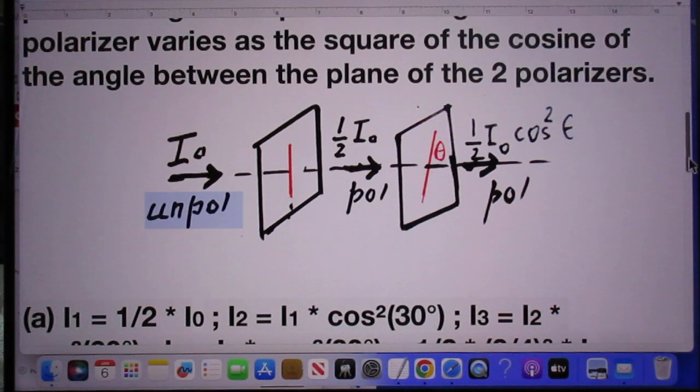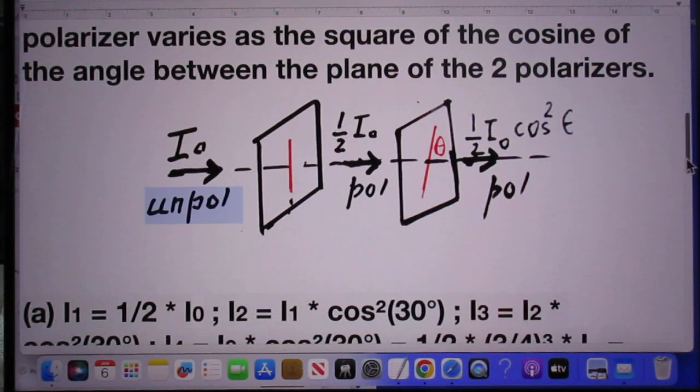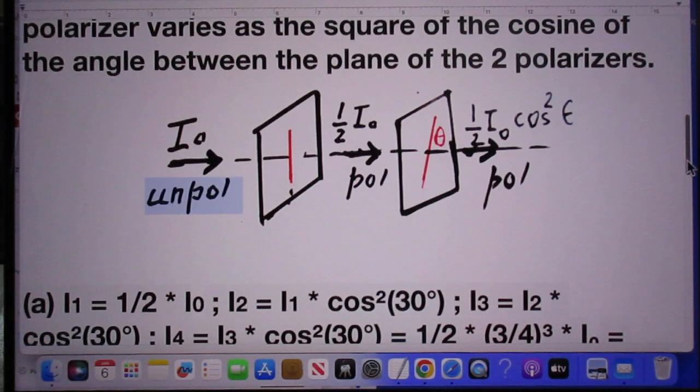And Eugen is going to apply Malus's law every time that it goes through a polarizer.